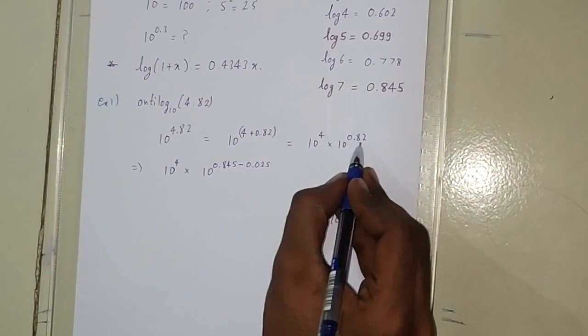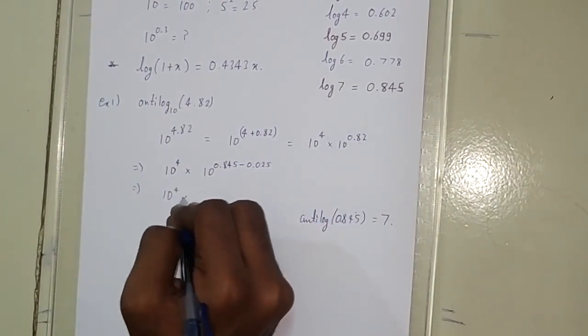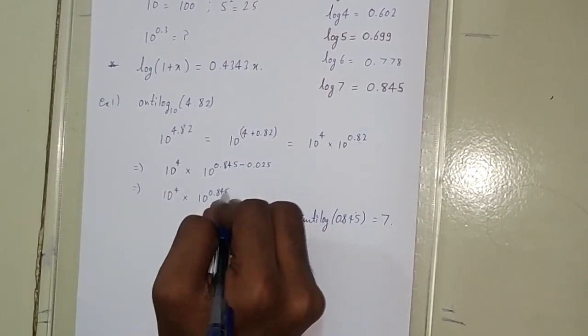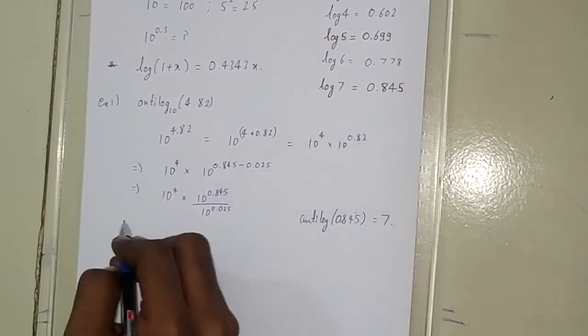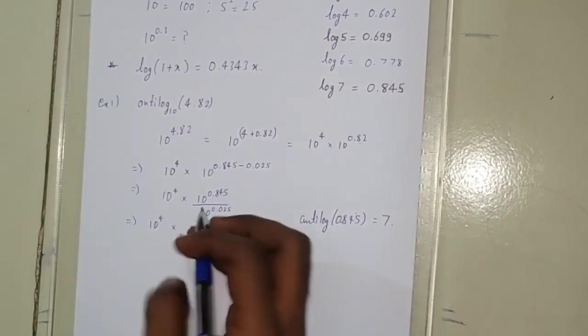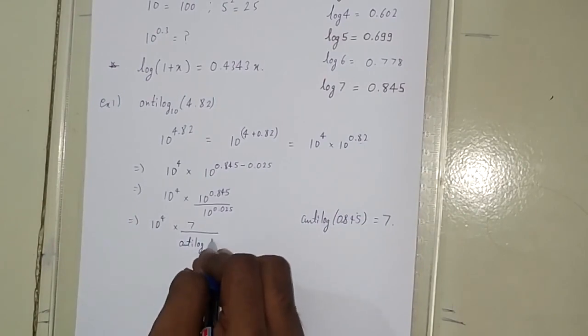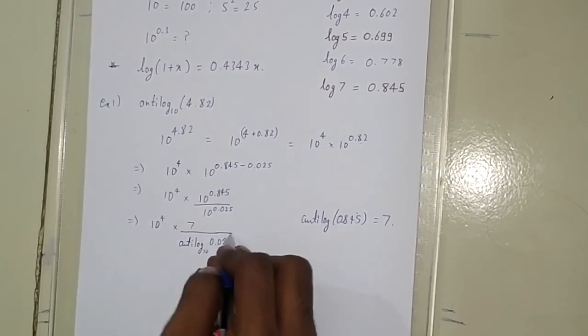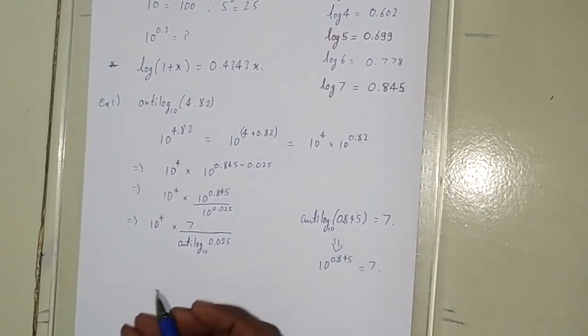So this can be written as 10 to the power 0.845 divided by 10 to the power 0.025. We know antilog of 0.845 is 7, so substitute that. Now we need to find antilog of 0.025, which can be written as 10 to the power 0.845.